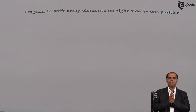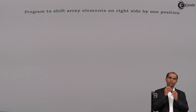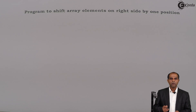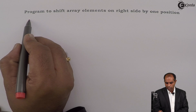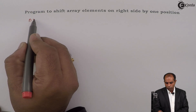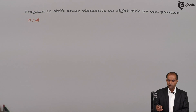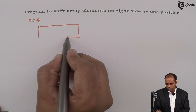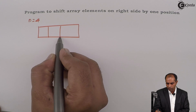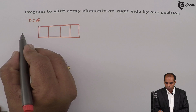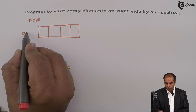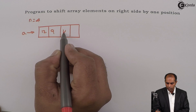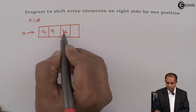How do I carry out this task of shifting the elements of an array by one position? Suppose I have four elements in an array. This is my input array A: 12, 9, 14, and 8.